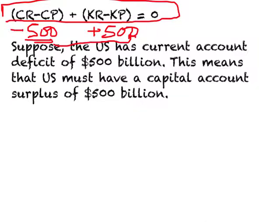When you have a current account deficit, you are not able to pay for your imports based on your export earnings, and hence you need to borrow money or allow foreign investments into your country. This is what has been happening to the US: it has had a current account deficit year after year, financed by a capital account surplus. Other countries around the world also face similar situations.